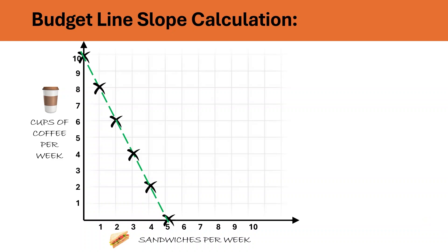We already know that the slope of a curve is calculated as a change in variable on the vertical or y-axis divided by change in variable on the horizontal axis. In our example, the slope would be the number of coffees that the consumer is willing to sacrifice for an additional sandwich. So this means that the slope is minus 2, meaning for every one sandwich, you give up 2 coffees.